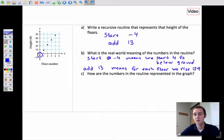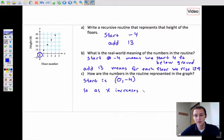How are these numbers in the routine represented in the graph then? This number over here that's already circled, this is our start point. Our start is zero comma negative four, the zeroth floor, and it's four feet below ground. Then for each one floor that we go up, the height increases by 13. As x increases by 1, y increases, or the height increases by 13.